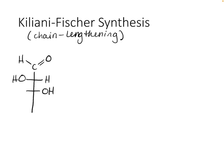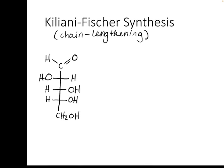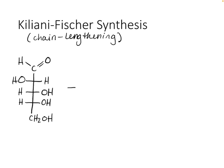If you have a monosaccharide and you want to lengthen the carbon chain and add another chiral center, what you can do is first add hydrocyanic acid. That's going to replace your aldehyde group with a cyanide group.